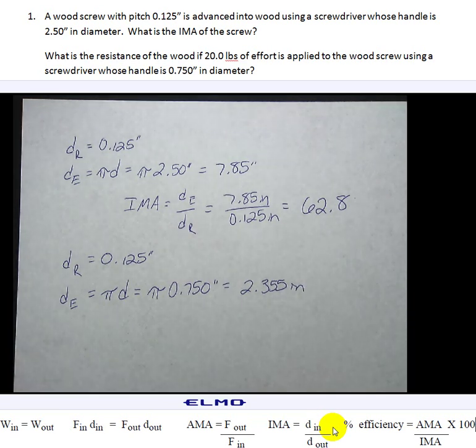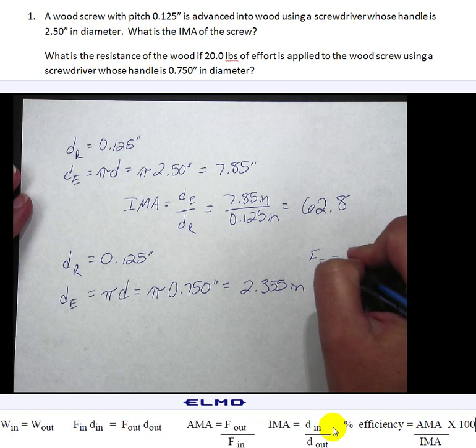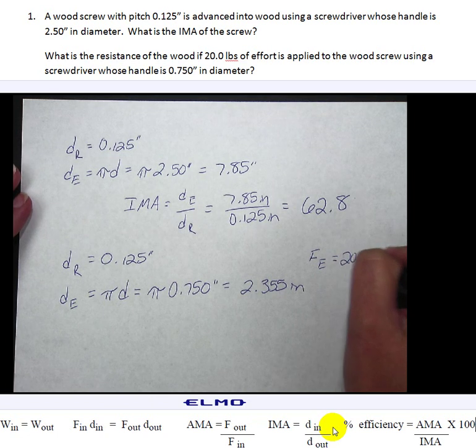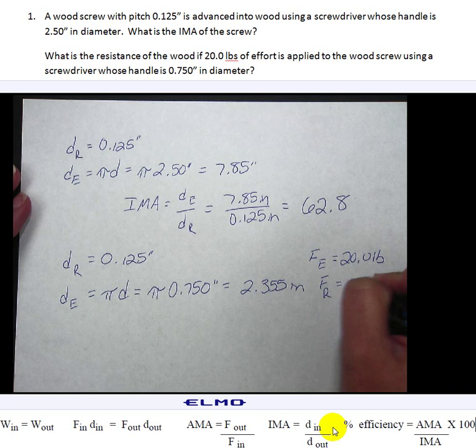This is what is the resistance of the wood if 20.0 pounds of effort. So that means our force of our effort is equal to 20.0 pounds. So our force of our resistance is what we're trying to find.